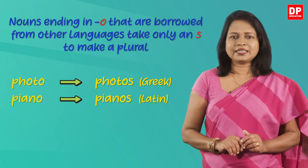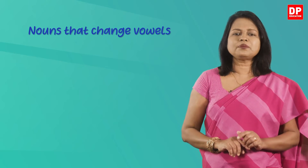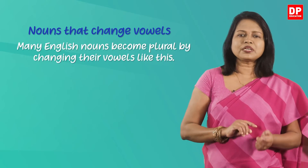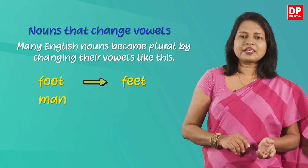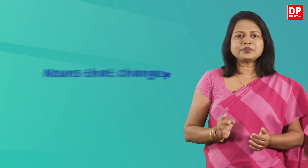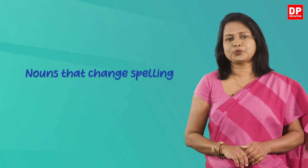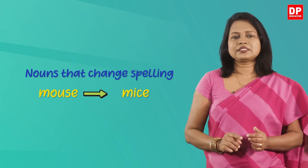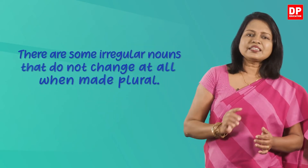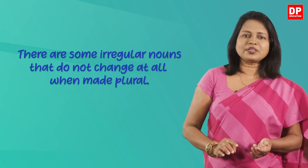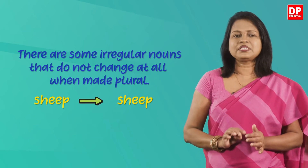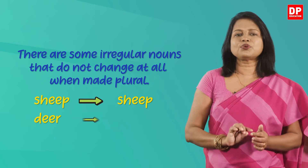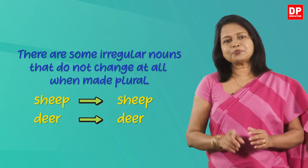Next, you have nouns that change vowels when forming the plural. Many English nouns become plural by changing their vowels: foot becomes feet, man becomes men. Some nouns change their spelling when forming the plural: mouse becomes mice, child becomes children. Then there are irregular nouns that do not change at all when made plural — sheep remains sheep, and this is the same for the word deer. The plural and singular forms are the same.